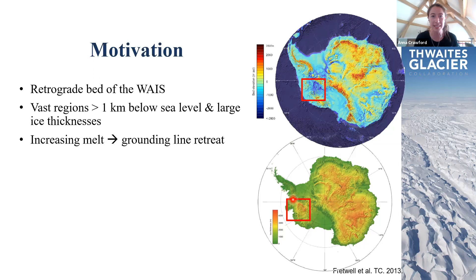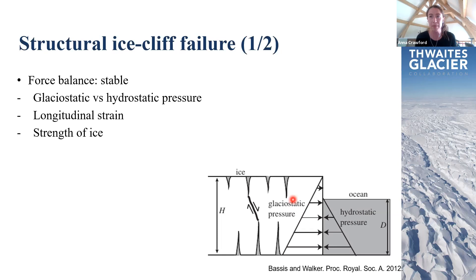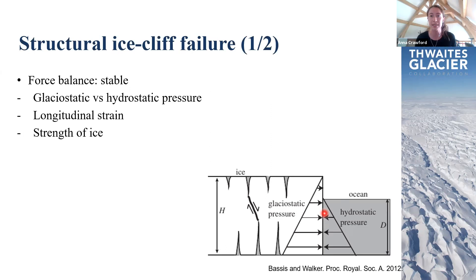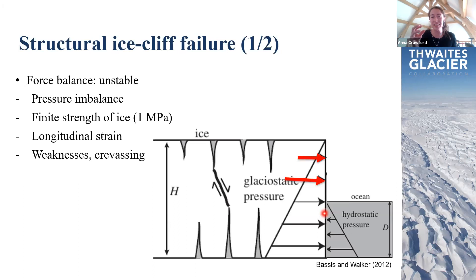I want to go over some basics of ice cliff stability and instability. Here we have a stable ice cliff where outward-pressing glaciostatic pressure is countered by hydrostatic pressure exerted by the ocean column. The longitudinal strain caused by this pressure imbalance is not a problem because the cohesive strength of ice keeps the ice face sound. However, as the ice cliff increases in height, forces become increasingly imbalanced, and when longitudinal strain overpowers the finite strength of ice, ice cliff failure can occur. Weaknesses and crevasses influence ice strength and the cliff height maintainable before failure.